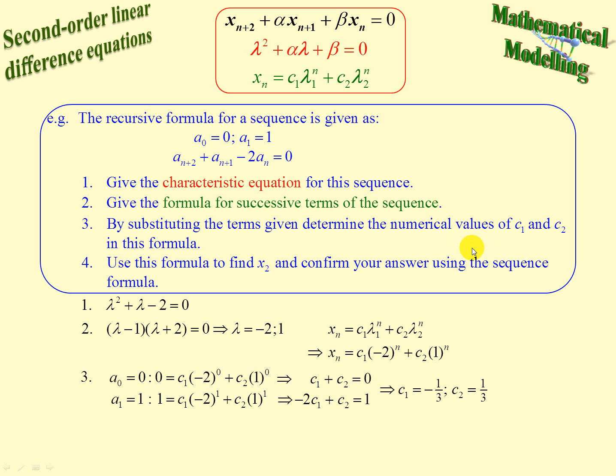So now we've completed number 3, we've found the numerical values. Now we need to use the formula to find x sub 2 or a sub 2. So we take those and substitute them back into our formula. There we are. We've taken those two values, substituted into the formula, and there it is. That's x sub n or a sub n. Now we substitute 2 for n and solve for x sub 2, negative 1.